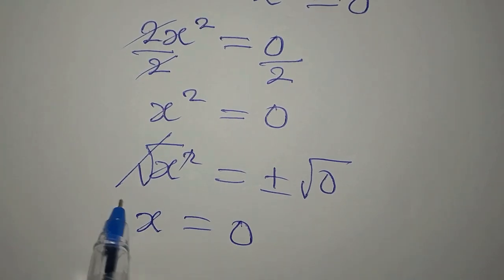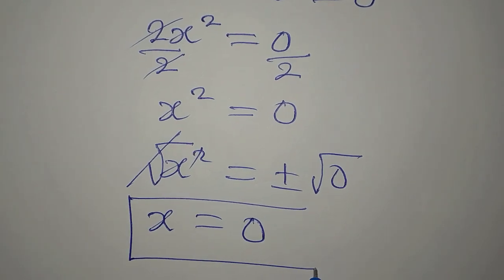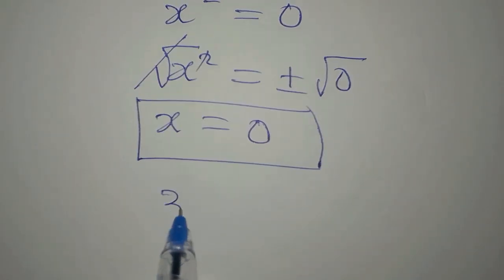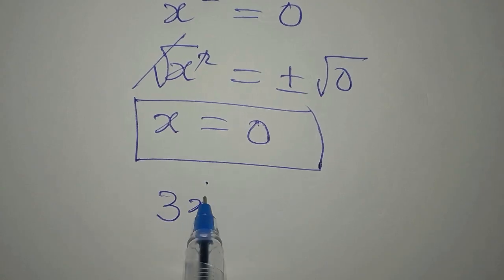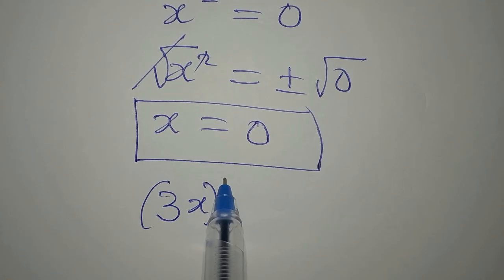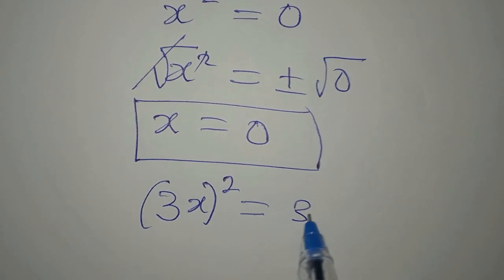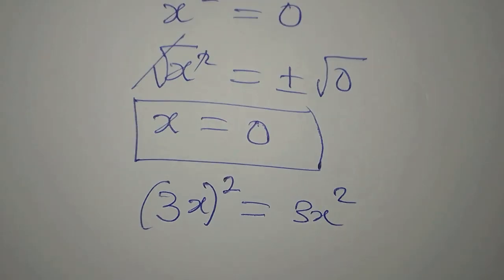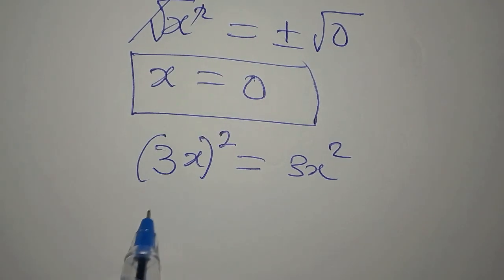So if you put that into this, (3x)² = 3x², will it be balanced? This side we're going to have 3 times zero squared, and on the other hand we have 3 times zero squared.